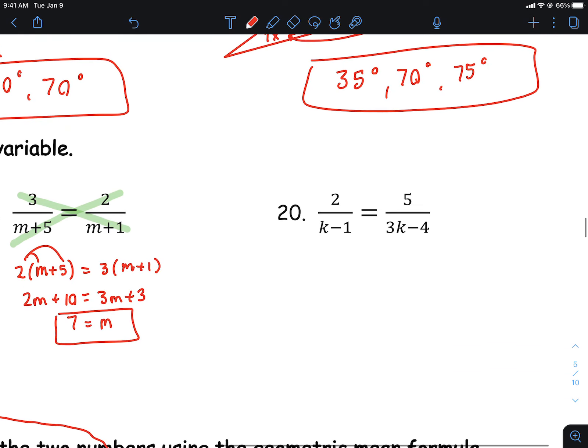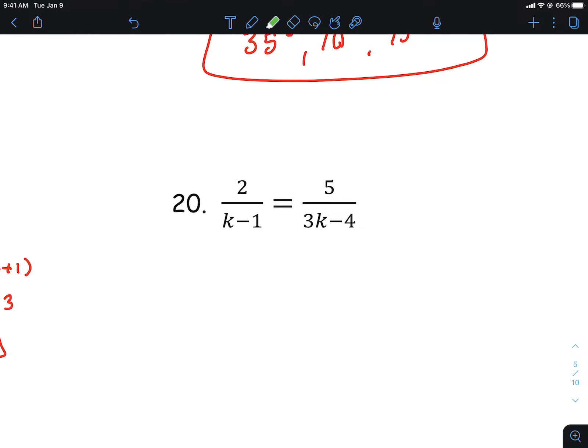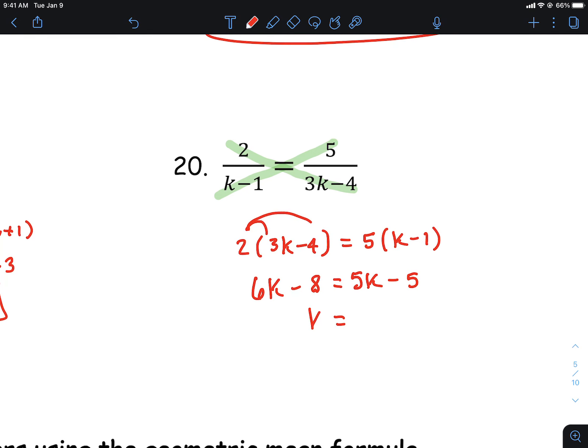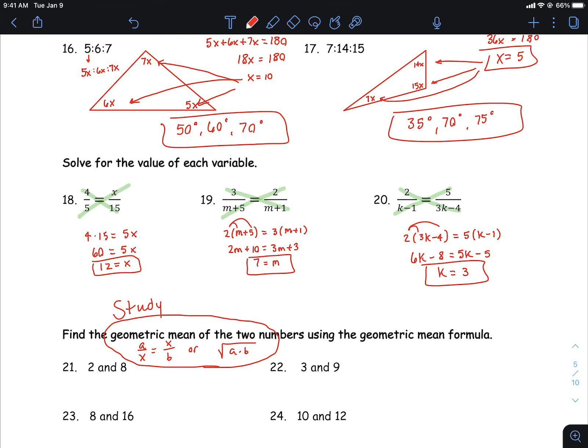Moving along, last one. Kind of the same thing. We'll need some parentheses here. We'll go 2 times all of that, 5 times all of this. So 2 times 3k minus 4, 5 times k minus 1. And then you've got some more distributive property going on here. 6k minus 8, and then 5k minus 5. Okay, subtract 5k and then add the 8, and you get k is equal to 3. And that'll be it.